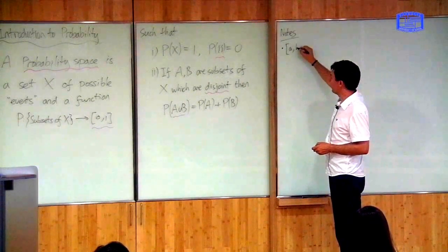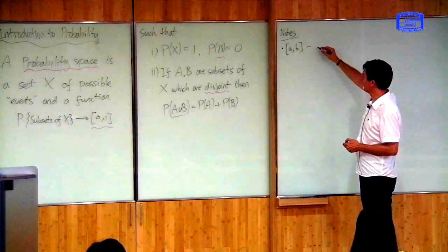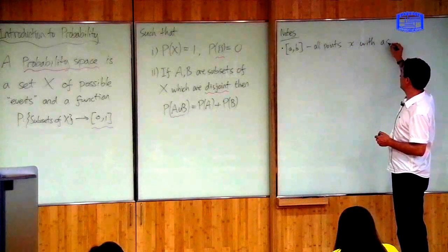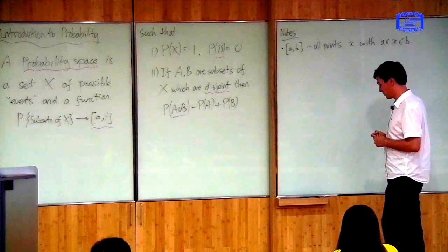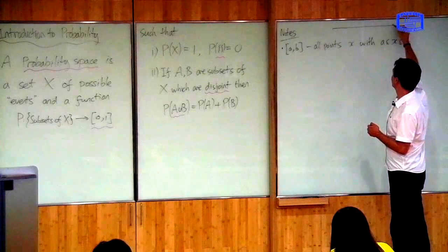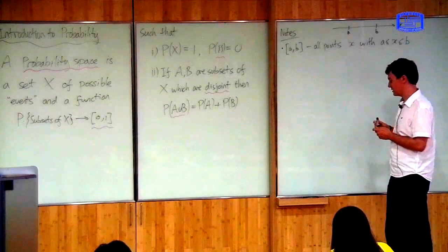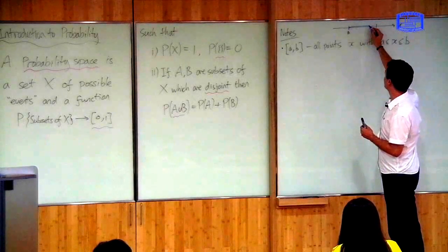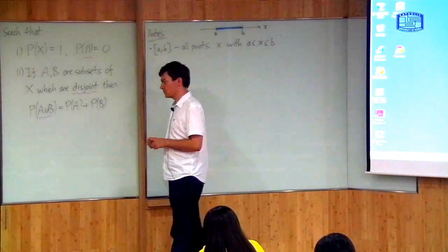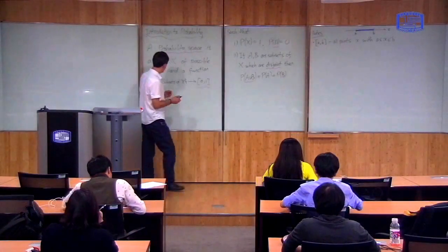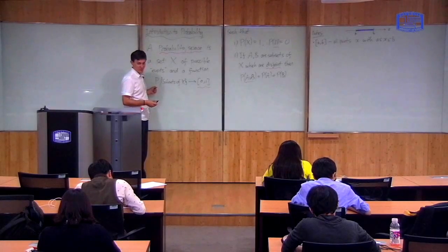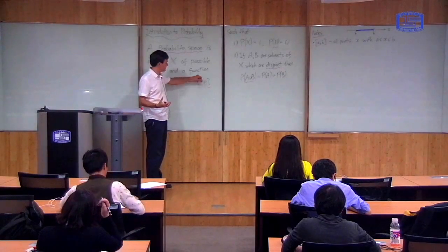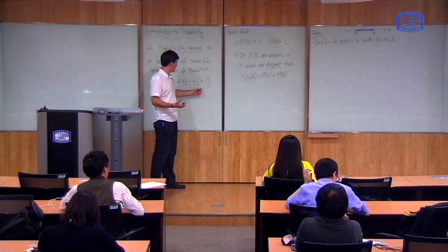First of all, this interval between A and B means all the points between A and B — all points x with A less than or equal to x less than or equal to B. If I draw this on a number line, the square bracket notation with A and B means all of those numbers between A and B. This is necessary here: P is the probability function, and when you ask for the probability of something, it's always between 0 and 1. If the probability is 1, that means it definitely happens. If the probability is 0, that means it never happens.